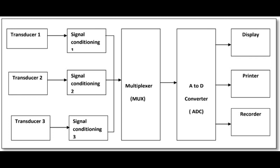The output of the signal conditioner is fed to the multiplexing device. With the help of multiplexing, all individual signal data — called lower bandwidth communication channels — are combined and transmitted over a higher bandwidth channel. At the receiving end, demultiplexing recovers the original lower bandwidth channels. It scans across a number of analog signals, time-sharing them sequentially into a single analog output channel.